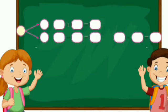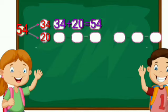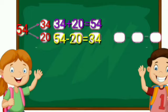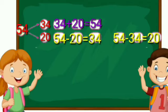Make one example of your own like the above and solve it. Numbers: 54, 34 and 20. First make an addition example: 34 plus 20 is equal to 54. We can get two examples of subtraction — one is 54 minus 20 is equal to 34, and another subtraction example is 54 minus 34 is equal to 20.